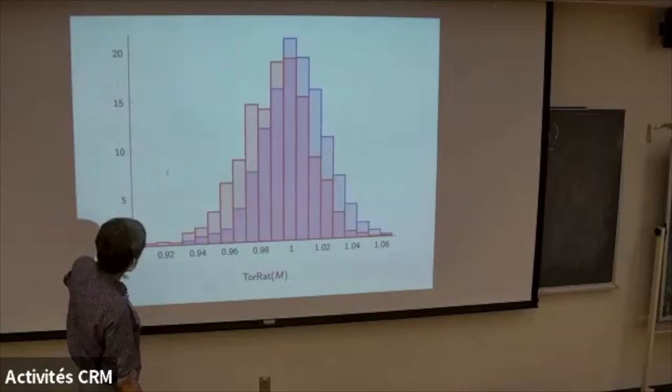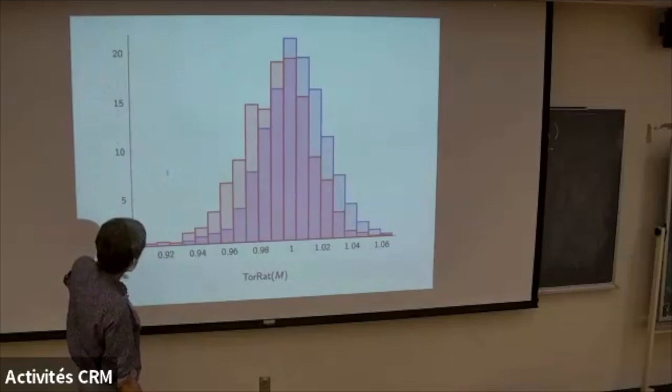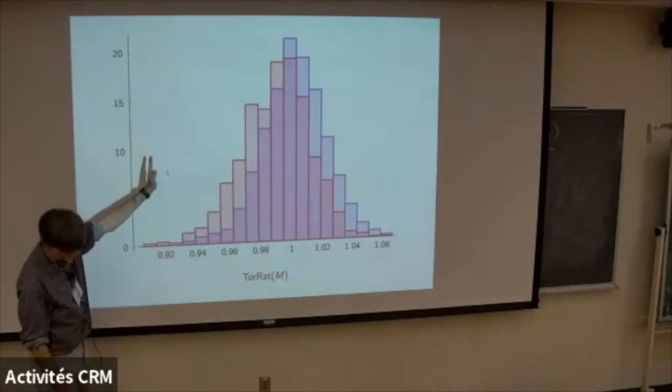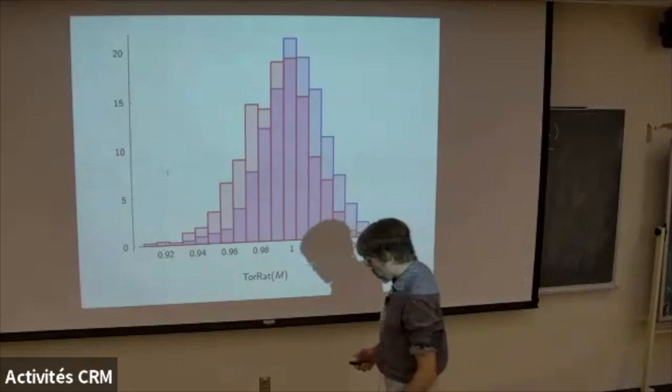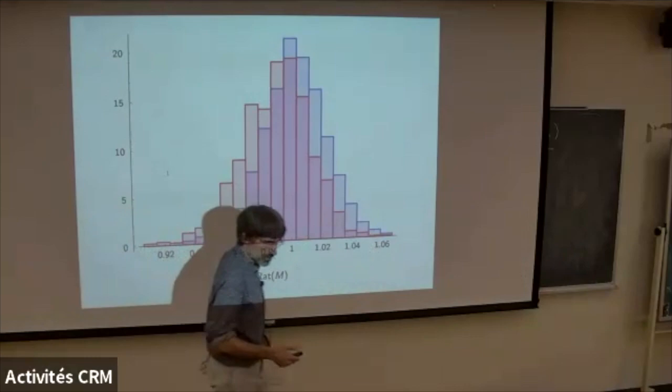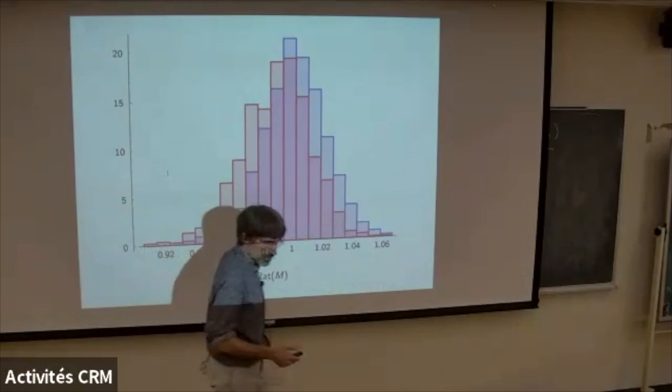This is a histogram of the data for the red and for the blue, cutting things off at volume at least 15,000. You see the histogram of the red, the histogram of the blue, and the blue is shifted slightly higher. This is at the limit of what we could compute.